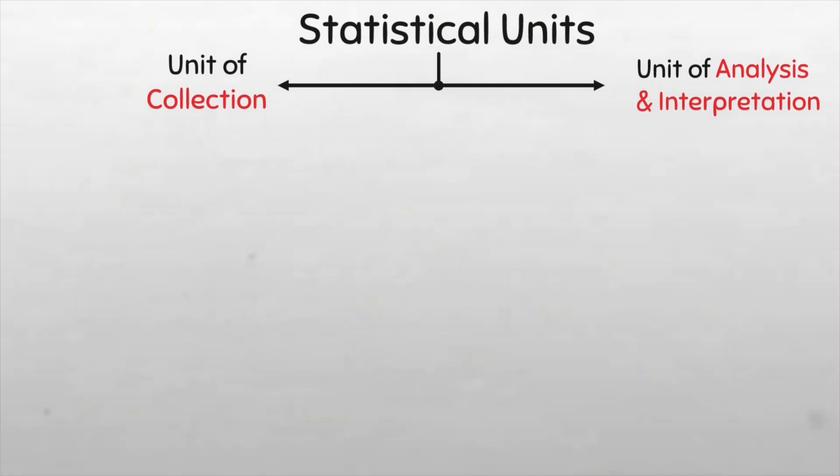The unit of collection refers to individual element or member of the population that data is being collected from. For example, if data is collected at the level of schools, then our unit of collection is each individual school that the data is collected from.